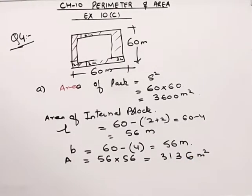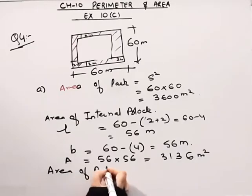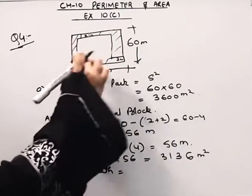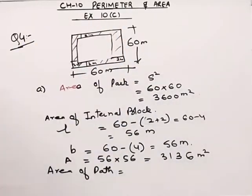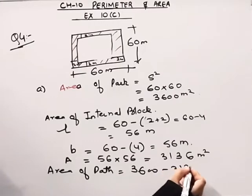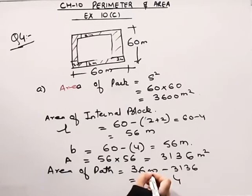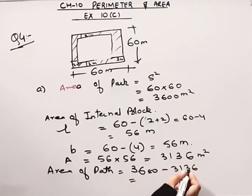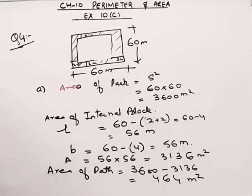Now the question is we have to find out the area of the path. So the area of path — from the total area, if we subtract the area of the internal block, we will get the area of the path. That is 3600 minus 3136, which comes out to be 464 meter square.